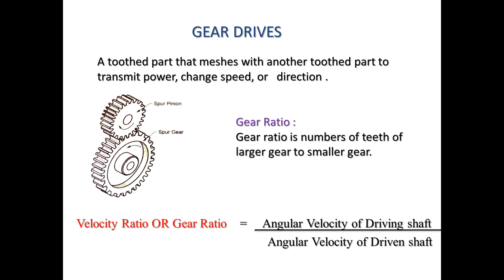Hello everyone. In this lecture we are going to discuss different types of gears and gear drives. A gear is a toothed part that meshes with another toothed part to transmit power, change speed, or direction. Drives are mechanisms used for transmitting power and motion from a prime mover to the driven machine. The prime mover is the power source — it may be an electric motor, IC engine, or different types of turbines.